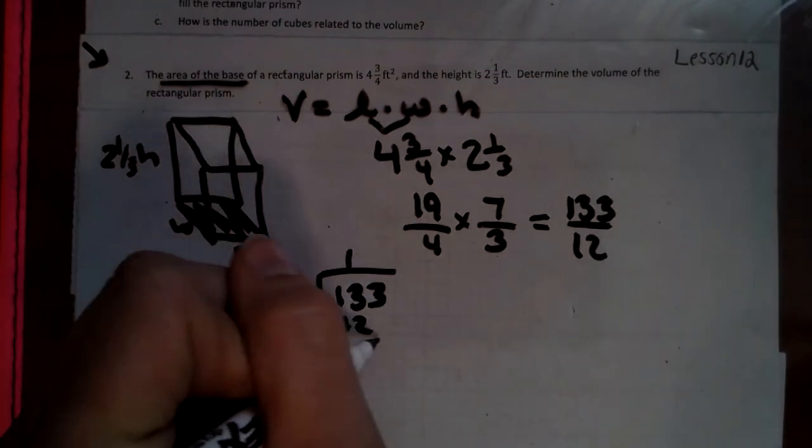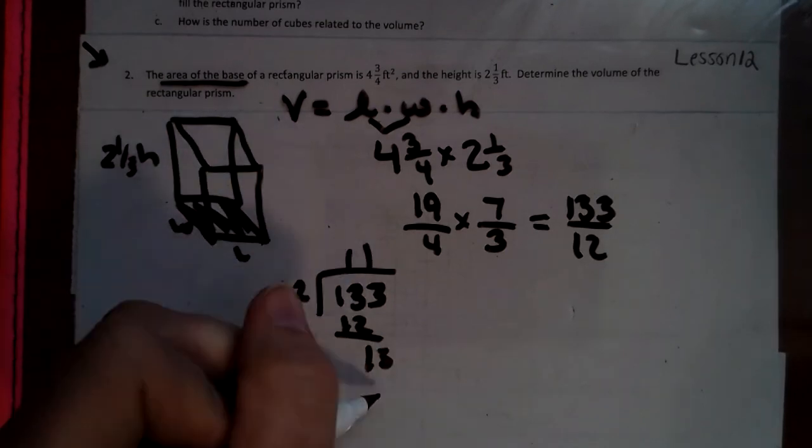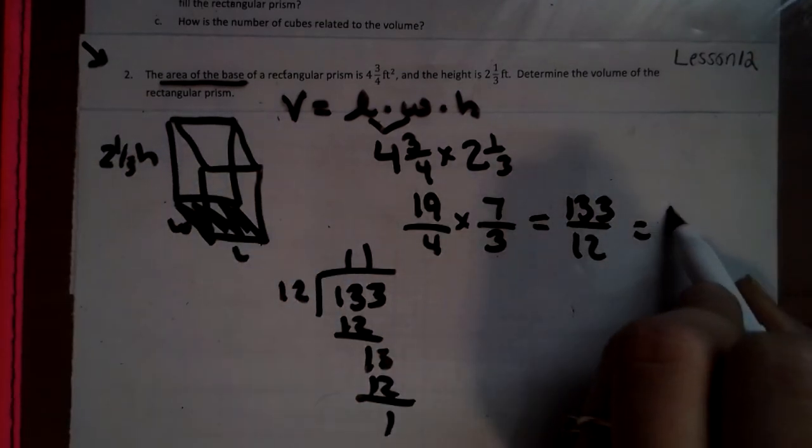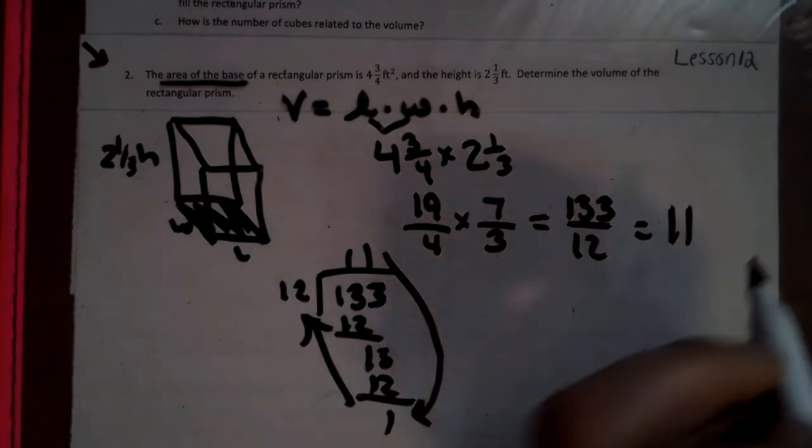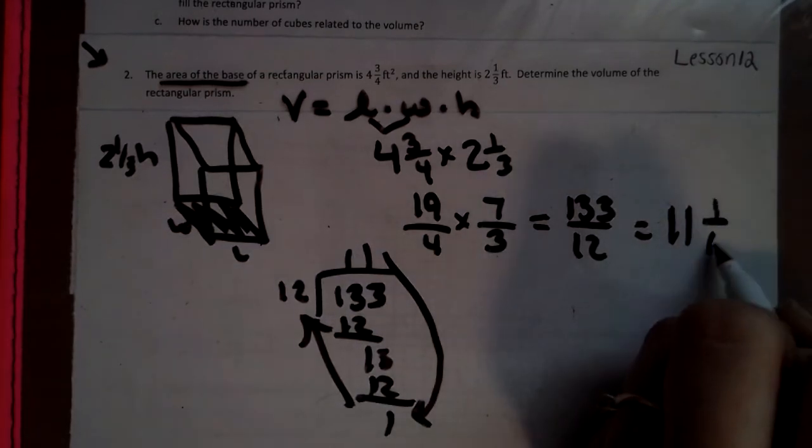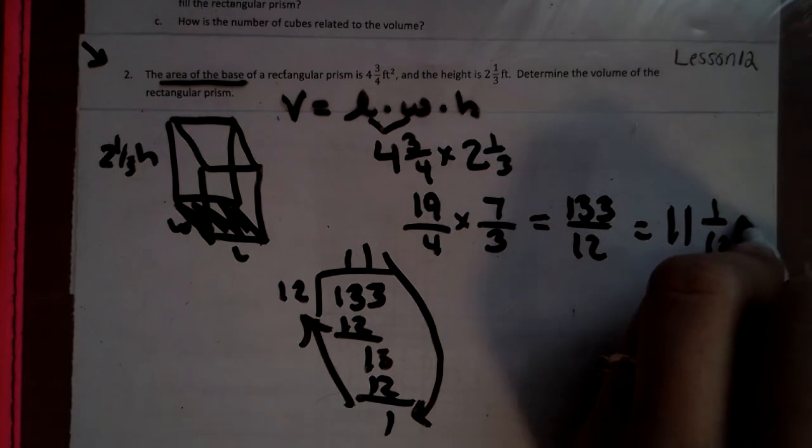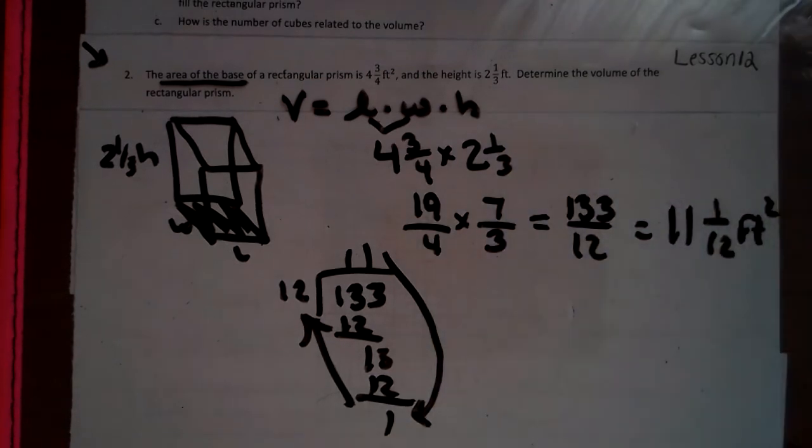Going once. 13 leftovers. So our answer to this is 11. And remember when we did this? 11 and 1 twelfth. It's feet squared because the label told us.